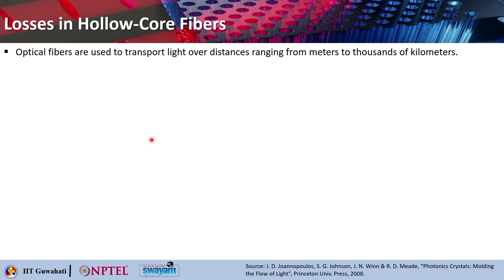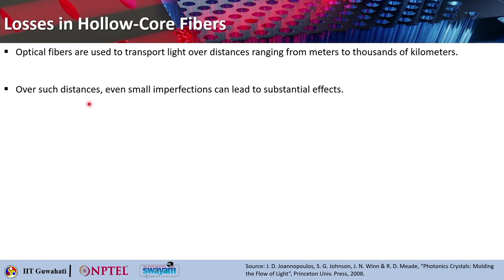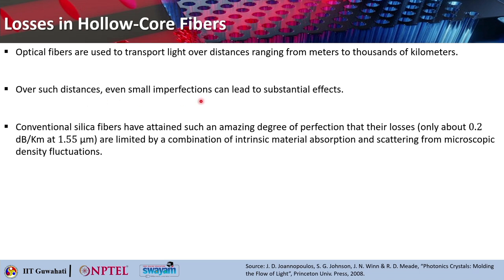Optical fibers are used to transport light over distances that typically range from several meters to thousands of kilometers. Over such distances, small perturbations can also lead to substantial effects. Conventional silica fibers have attained such an amazing degree of perfection that their losses are very minimal — only about 0.2 dB per kilometer at the telecom wavelength of 1550 nanometers — and are limited by a combination of intrinsic material absorption and scattering from microscopic density fluctuations.